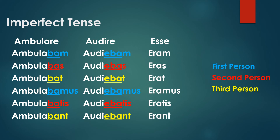Now, how to recognize the imperfect tense in Latin sentences. Here we have three columns of verbs — 'ambulare,' 'audire,' and 'esse' — conjugated in the imperfect tense. You'll notice that in the 'ambulare' conjugation section the letters 'BA' are underlined, and 'EBA' is underlined for 'audire.' If you see a 'BA' or 'EBA' segment in the verb, between the verb stem and the verb ending, you can be sure that this indicates the imperfect tense.